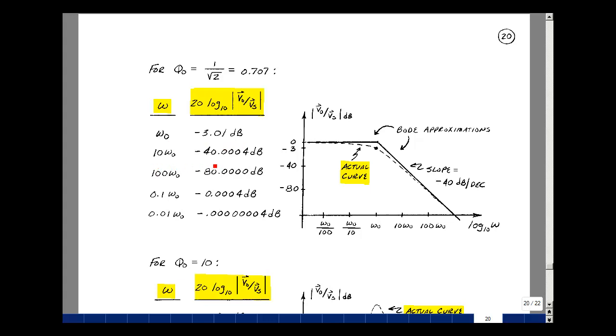When omega is equal to 10 omega naught, you get roughly minus 40 dB. When omega is 100 omega naught, you get roughly minus 80 dB. When omega is a tenth of omega naught, you get roughly minus zero dB. And when you have one one hundredth of omega naught, again, you're very close to zero dB.